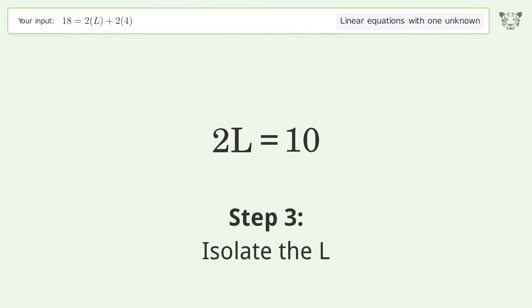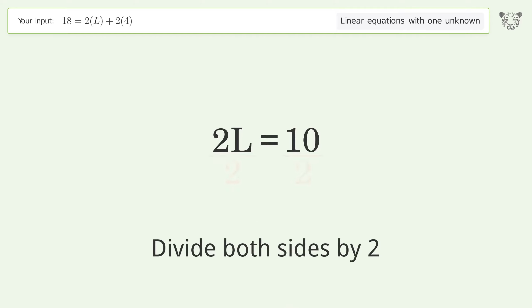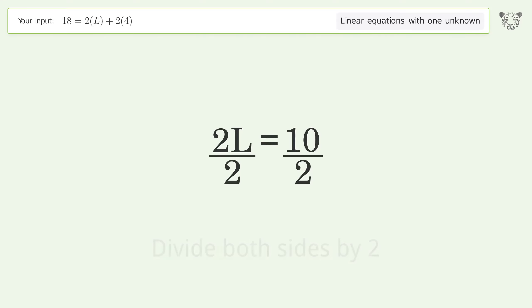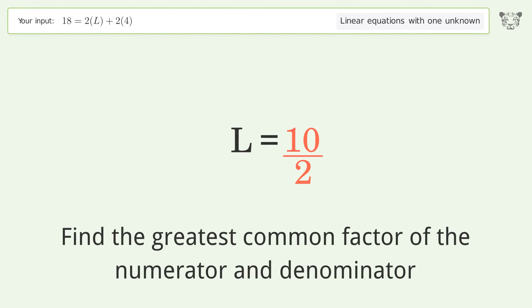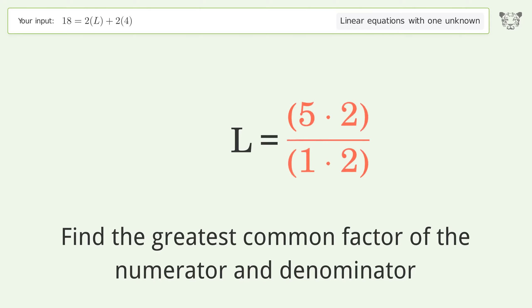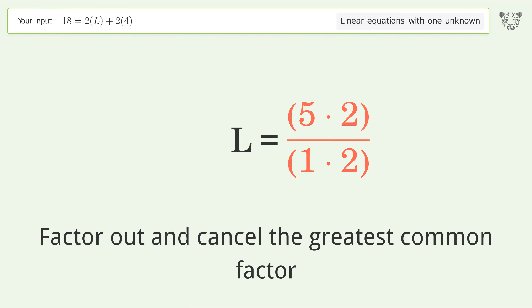Isolate L by dividing both sides by 2. Simplify the fraction by finding the greatest common factor of the numerator and denominator, then factor out and cancel the greatest common factor.